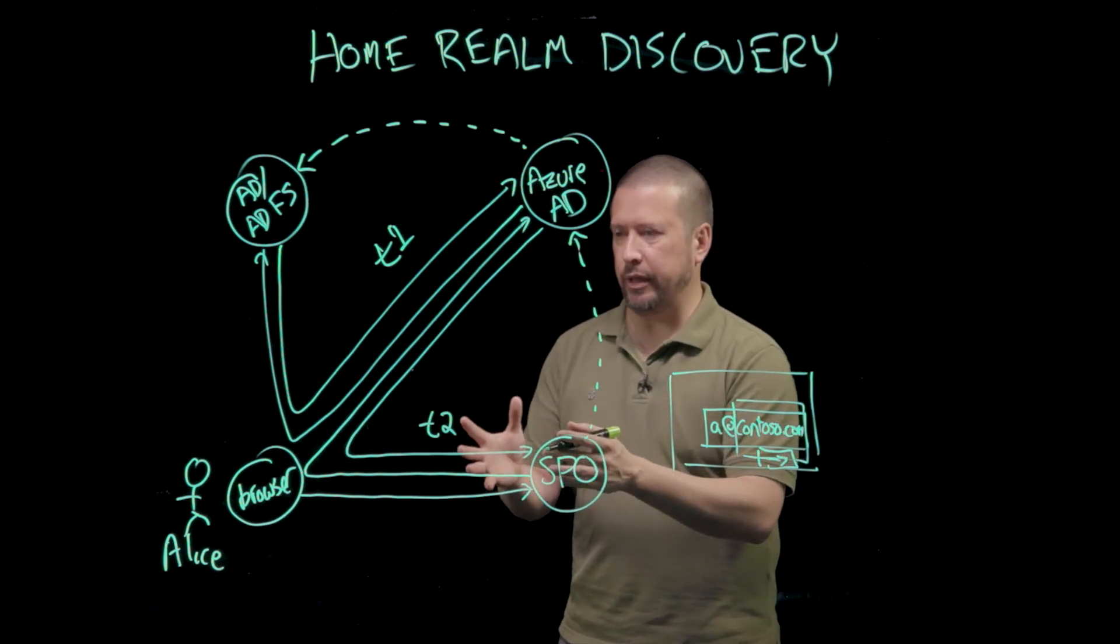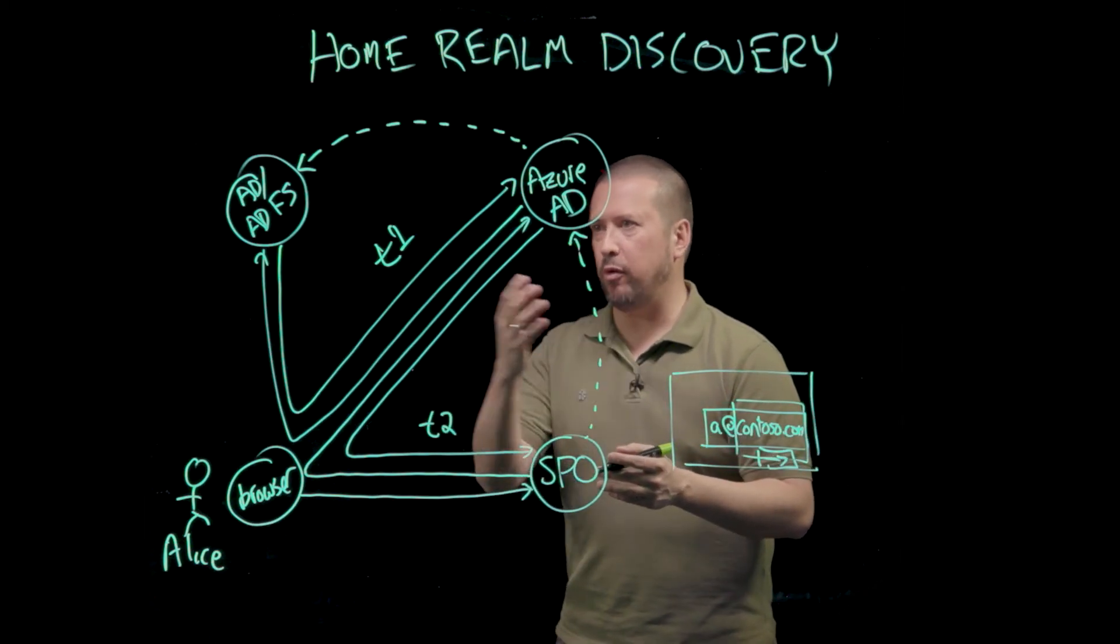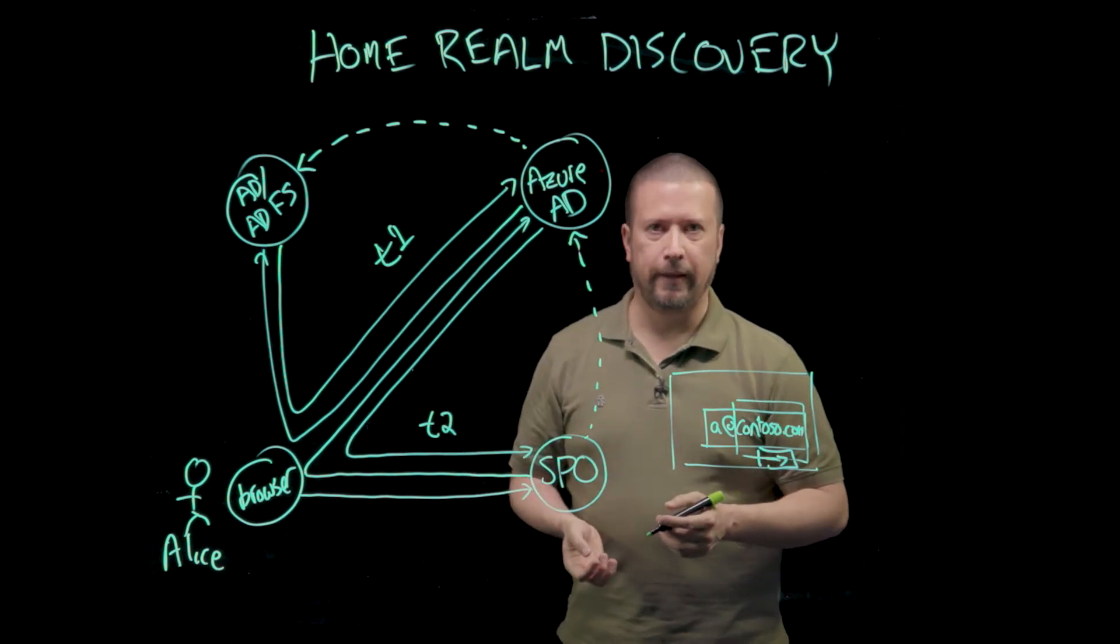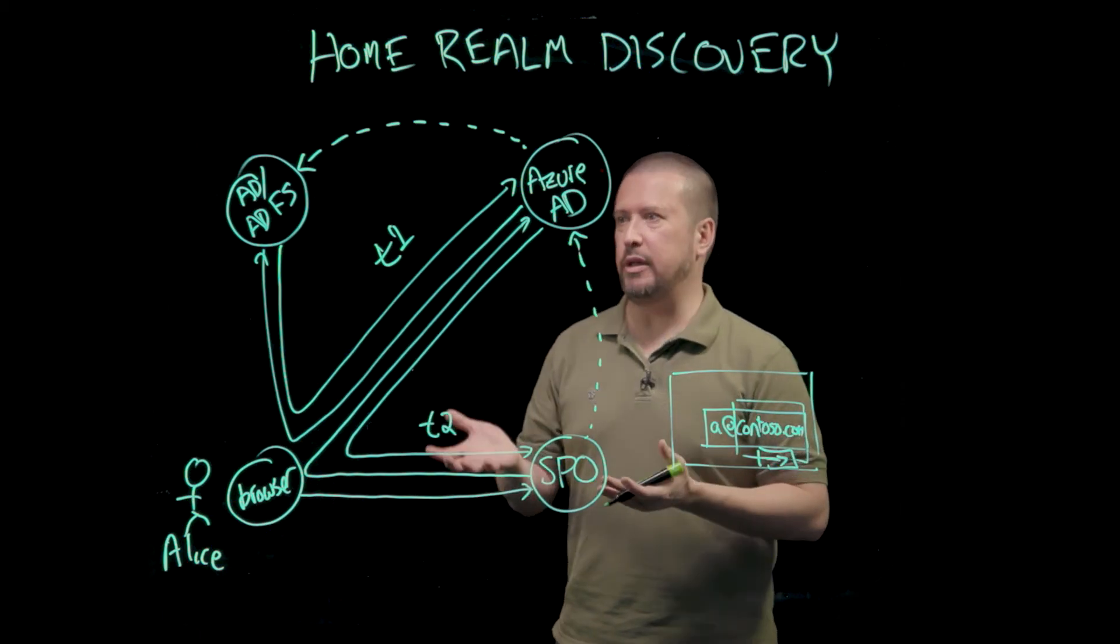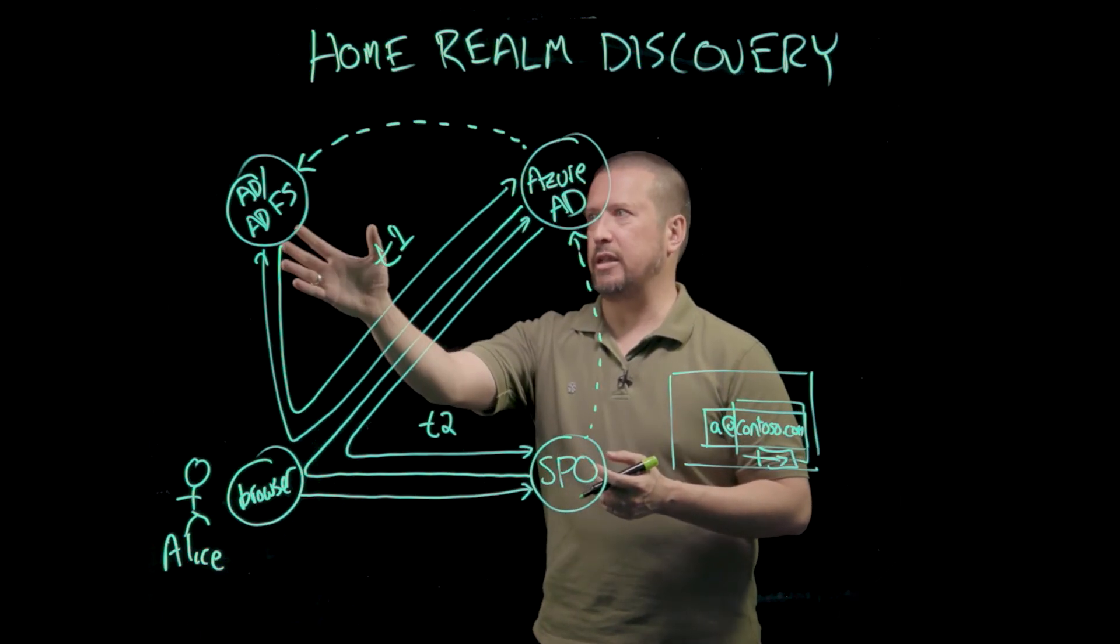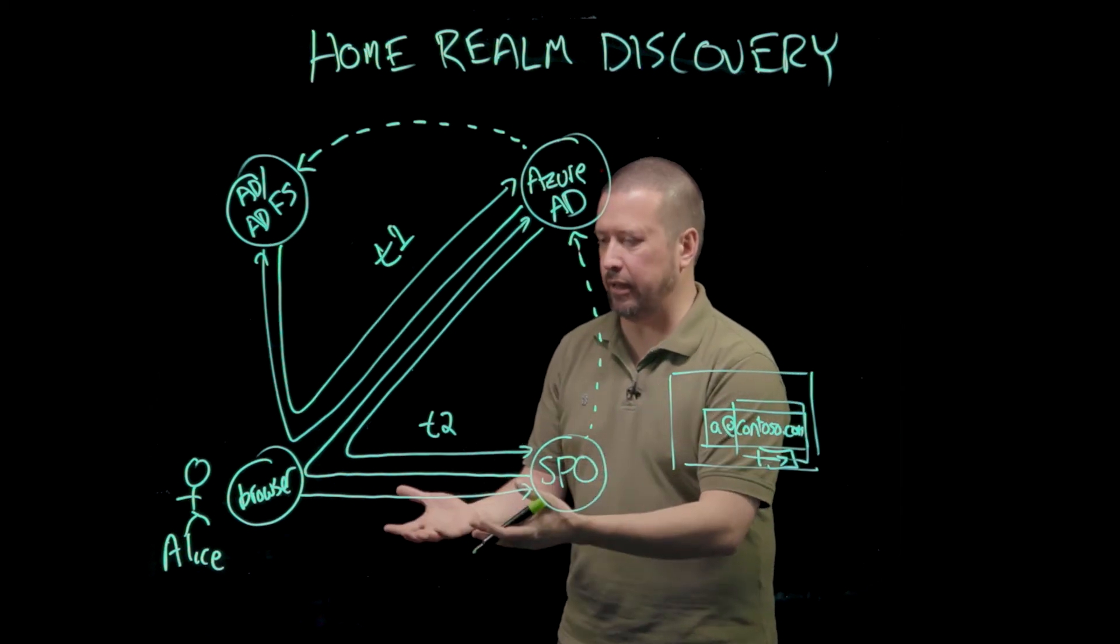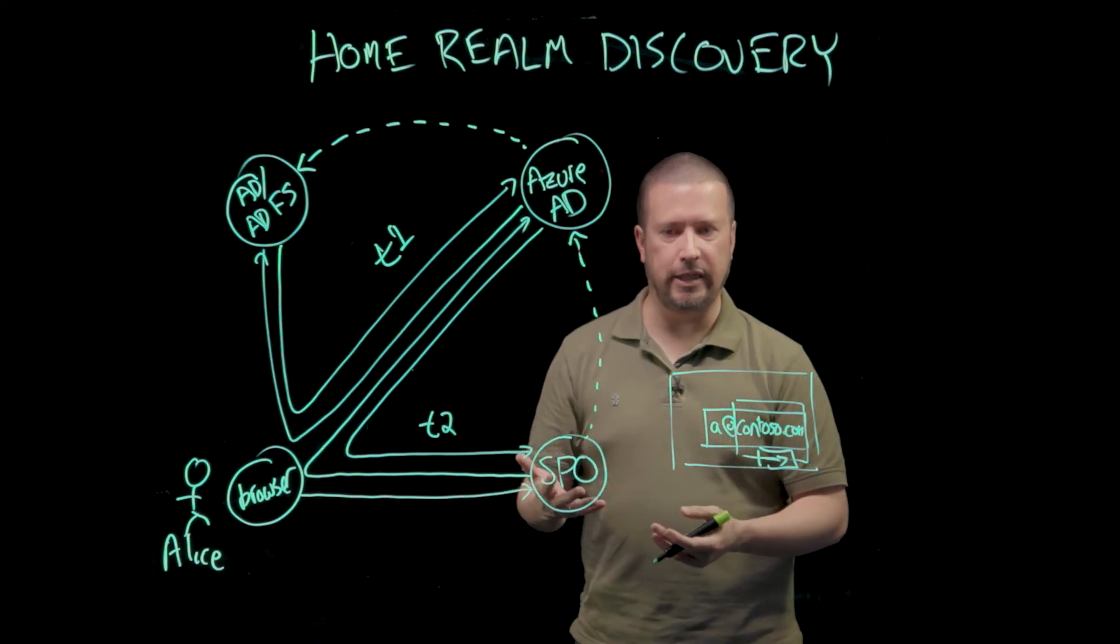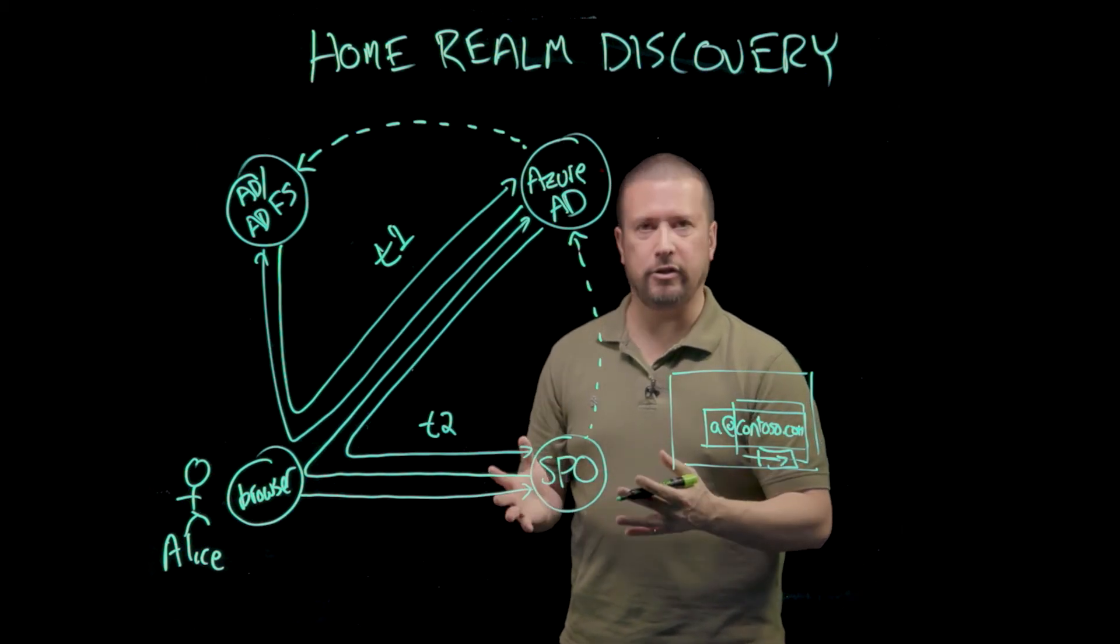There's a couple of interesting things to look at in this particular arrangement. For example, what's the relationship, if any, between token T1 and token T2? The answer is there is absolutely no necessary relationship between these tokens and the claims that are in them. Token T1 has the claims that ADFS knows that Azure AD needs to recognize Alice. Token T2 has claims in it that are issued by Azure AD that it knows SharePoint needs to have in order for it to do its job.